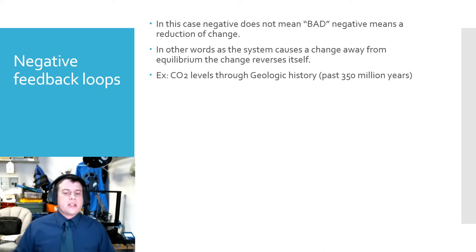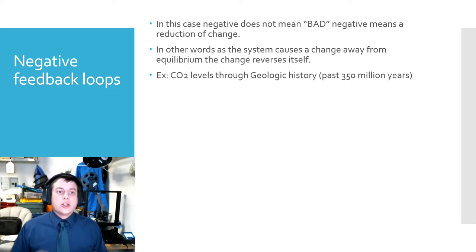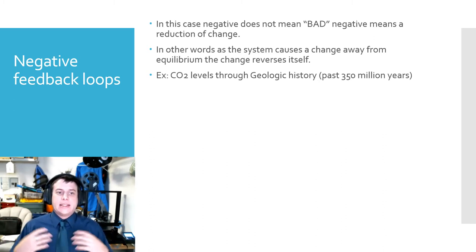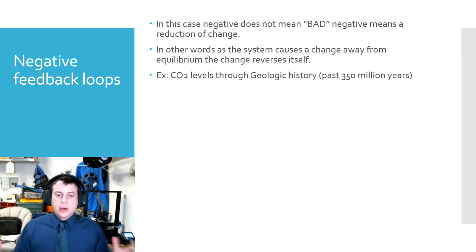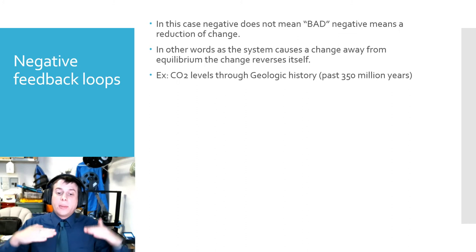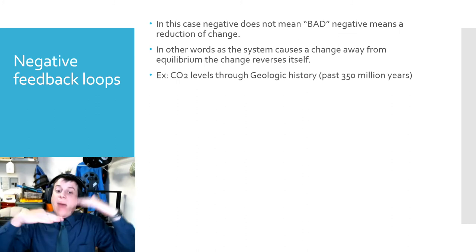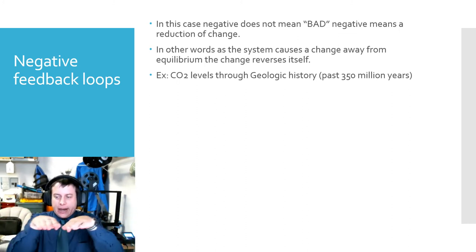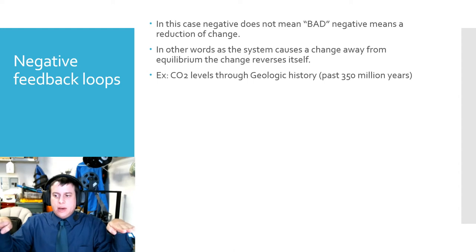Now let's talk about the opposite — a negative feedback loop. It doesn't mean bad. It just means a reduction in change. In other words, as the system causes a change away from equilibrium, it will then reverse itself back to equilibrium. Remember, equilibrium is like balance — everything is even and at a stable state.